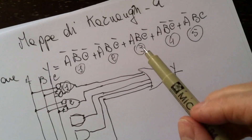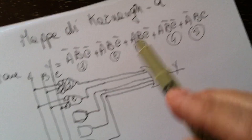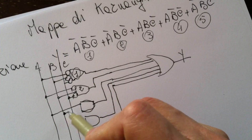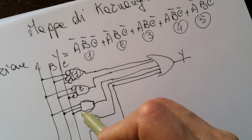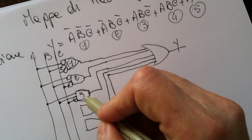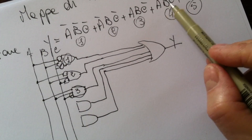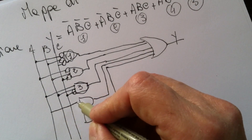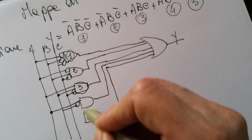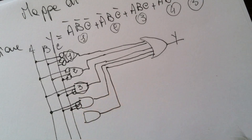Then we use the third AND port: A, B, NOT C. Then for the fourth term we have A, NOT B, and NOT C.